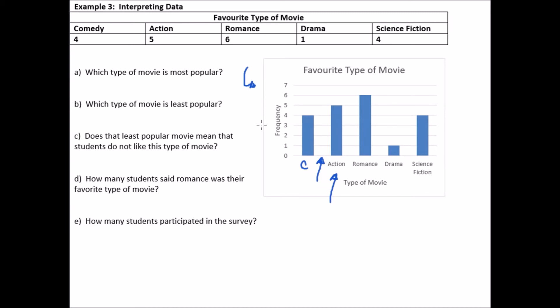Okay. So which type of movie is most popular? And we want to take a look at the frequency. And of course, like the higher the bar, the bigger the bar or the taller the bar, the more popular or the more number of people like it. So if we look at romance, it actually has the tallest bar. So romance is the most popular type of movie. And least popular is right here. Drama. Okay. Drama. Because it's the shortest bar.